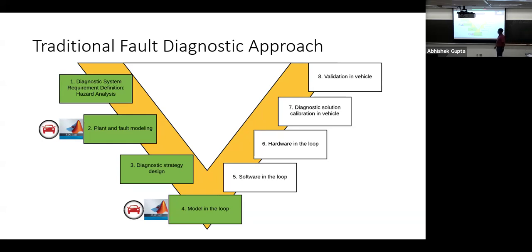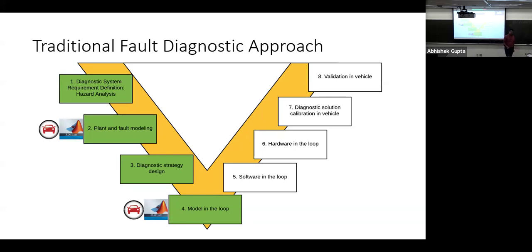Traditional fault detection is an old concept going back to machines in the 1700s and 1800s. The process involves: identifying hazards, plant and fault modeling, designing a diagnostic strategy, then running model-in-the-loop simulations, software-in-the-loop, hardware-in-the-loop, and finally calibration on the actual vehicle.